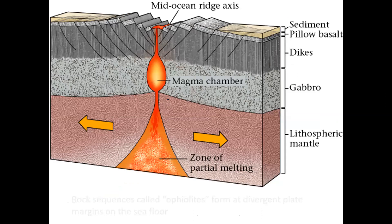I want to stress the importance of ophiolites, because this will become important when we talk about convergent plate boundaries. Ophiolites are a sequence of rocks — not a particular rock type, but a sequence. Ophiolites can only form on the bottom of the ocean floor at mid-ocean ridges.